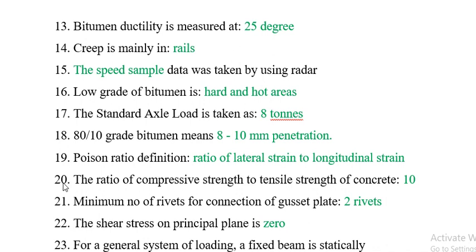Question 20: The ratio of compressive strength to tensile strength of concrete is 10. Question 21: The minimum number of rivets in a connection to a gusset plate is two rivets. Question 22: The shear stress on the principal plane is zero.